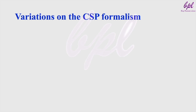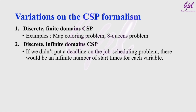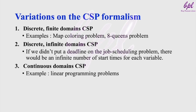In the world of constraint satisfaction problems, there are several variations based on the type of domains involved. First, we have discrete finite domain CSPs, where the variables have a limited set of possible values — examples include the map coloring problem and the 8-queens problem. Next, there are discrete infinite domain CSPs, which occur when the set of possible values is theoretically infinite; a great example is the job scheduling problem without a set deadline, where each job could have an infinite number of start times. Finally, there are continuous domain CSPs, where values can take on any value within a continuous range — these often involve linear programming where variables are continuous and solutions require optimization over real number domains.